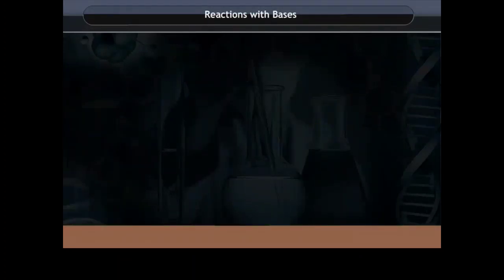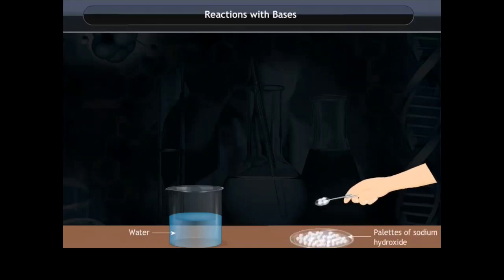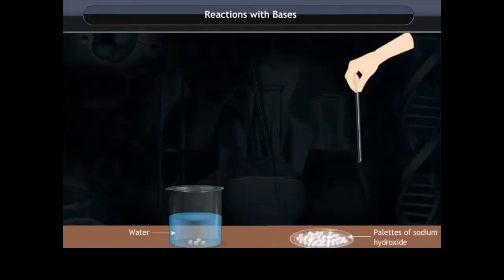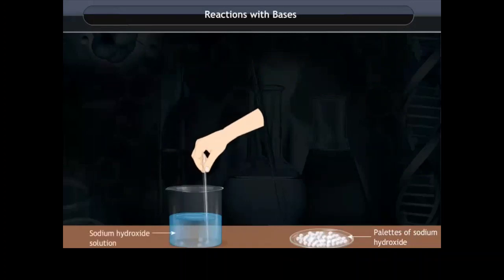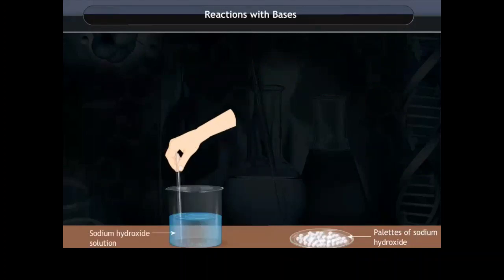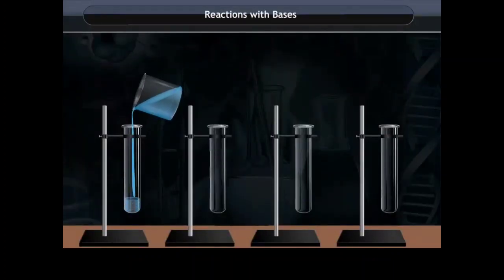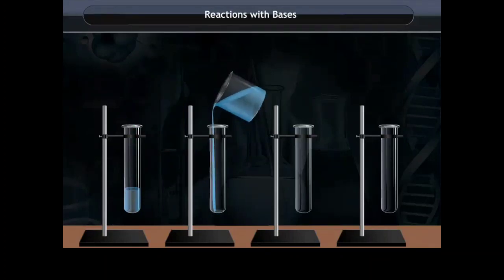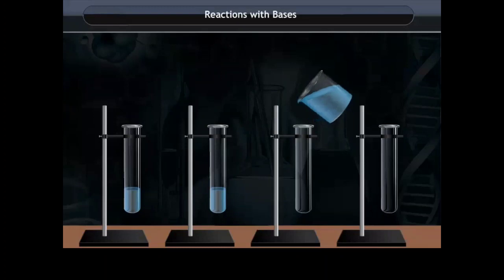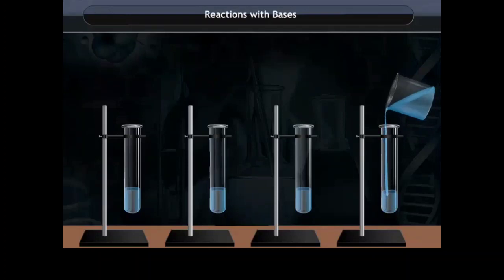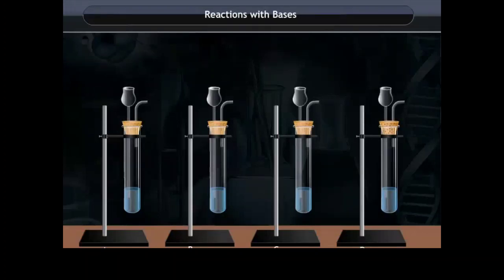Reactions with bases: Take a beaker containing water. Dissolve 2 or 3 pellets of sodium hydroxide. We get a sodium hydroxide solution. Now pour this solution in 4 test tubes. Label these test tubes as A, B, C, and D respectively. Close the mouths of test tubes with the help of a cork fitted with a thistle funnel.